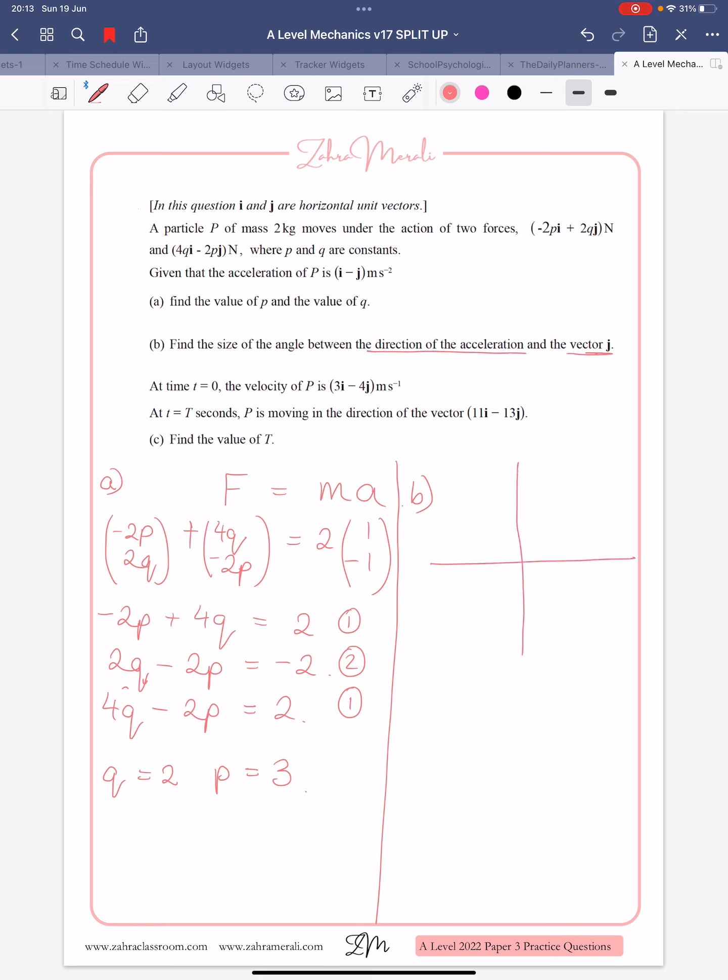So if I sketch the acceleration, we've got 1 minus 1, so we've got it here. And the angle that we want is the vector J. So remember, this is I, this is J. And it says it's positive J, so we're looking for this angle here.